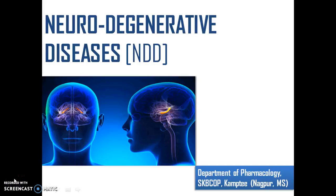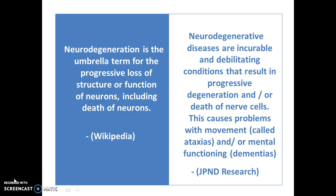In this presentation we are dealing with neurodegenerative diseases — an overview of the various neurodegenerative diseases. Neurodegeneration is the umbrella term for progressive loss of structure or function of neurons, including death of neurons. It is also an incurable and debilitating condition that results in progressive degeneration or death of nerve cells, which cause problems with movement and/or mental functioning like dementia.